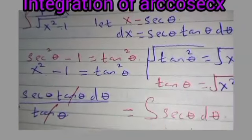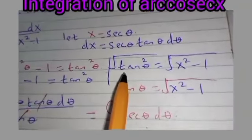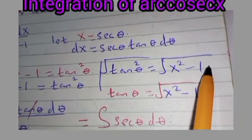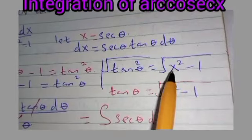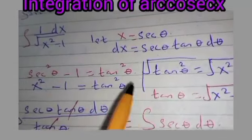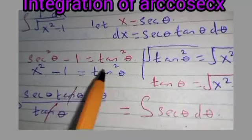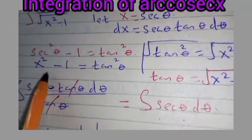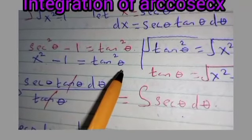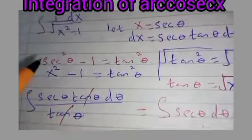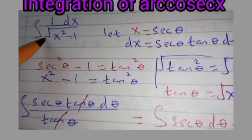Taking the square root of tan²θ gives us tan θ. So for √(x²−1), since we let x = sec θ, we have x² = sec²θ, and sec²θ minus 1 equals tan²θ. Therefore tan θ equals √(x²−1). Wherever we see √(x²−1) we substitute it with tan θ, as shown.